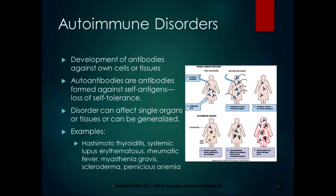We'll talk about each of those individually at the relevant time. For example, we'll talk about thyroiditis and Graves' disease when covering the endocrine system, rheumatic fever when covering the cardiovascular system, and myasthenia gravis when covering the nervous system. We'll talk about SLE right now.